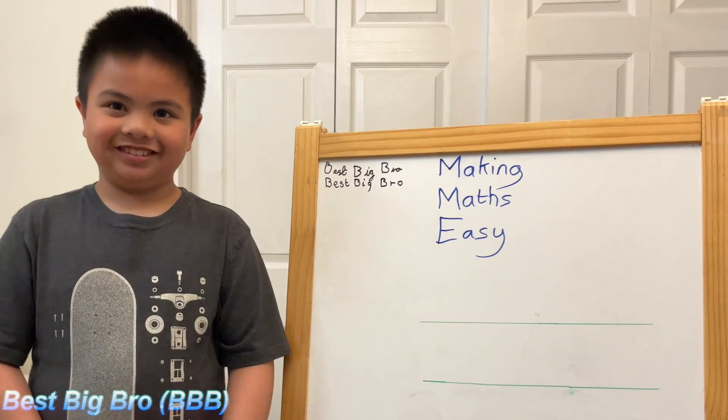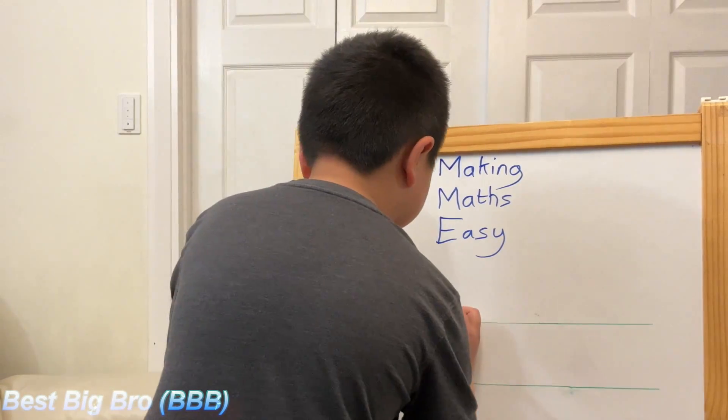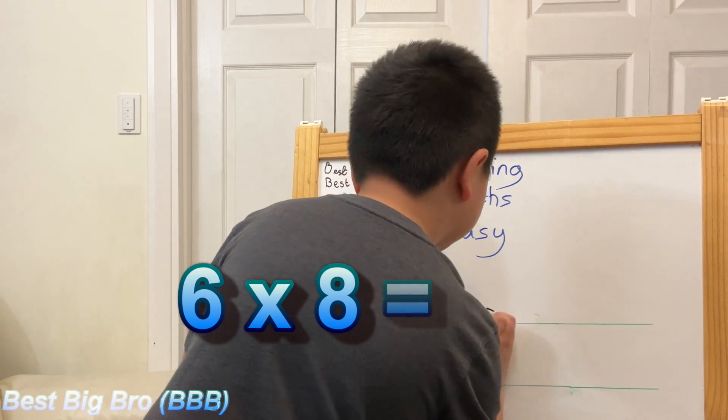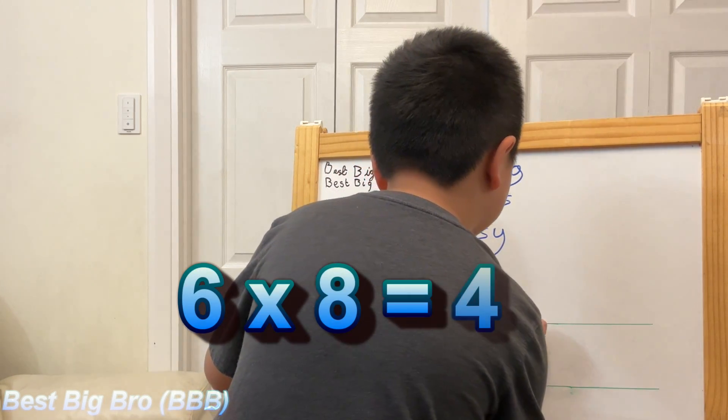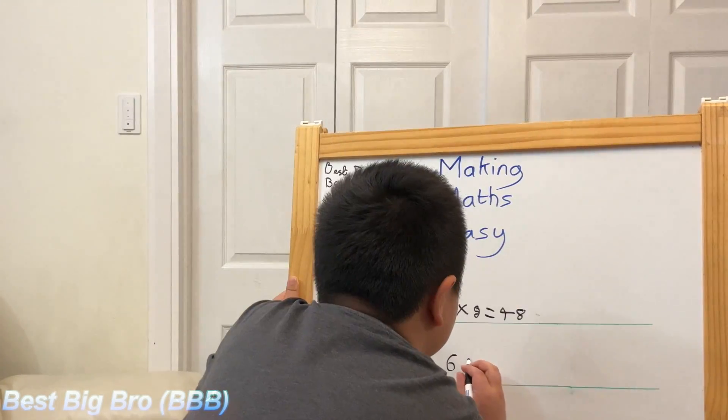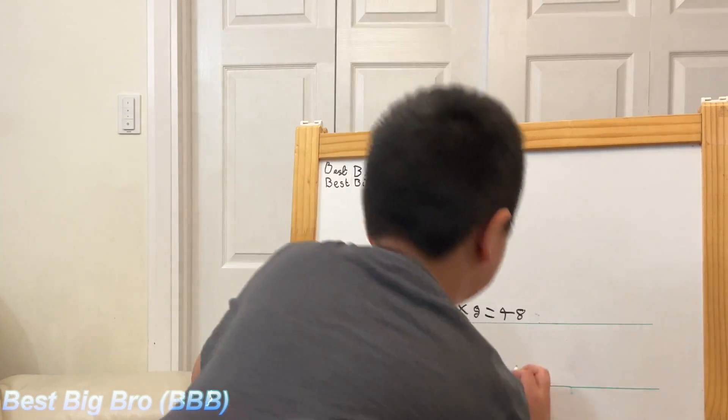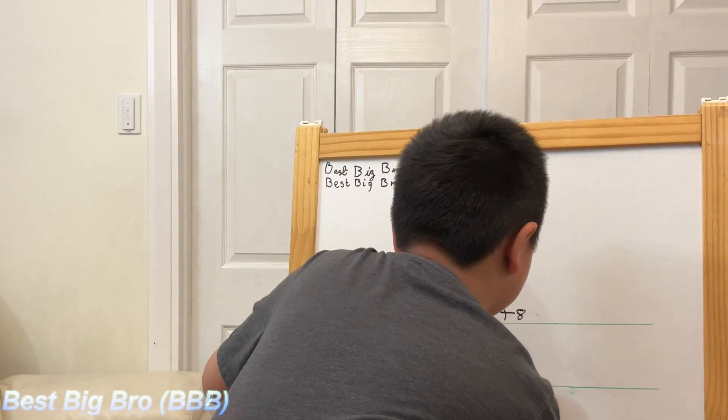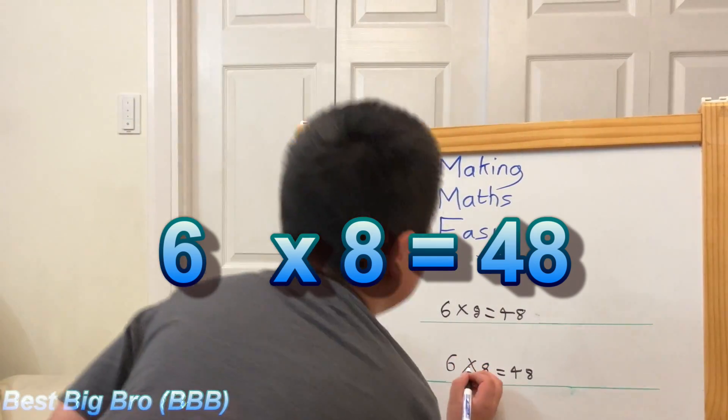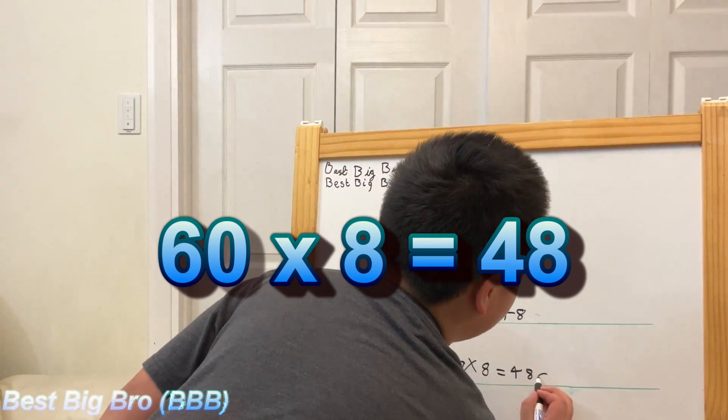Can you show me how you did that? OK. So, 6 times 8 equals 48. So I'm going to do it again. So I'm going to do a zero right here for 60 and I'm going to do another zero for 480.